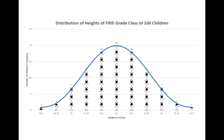You should have noticed that as the heights increased, so did the number of children who were that tall — and that was true until we reached the average height of 52 inches. As we continued with even taller and taller children, we found that there were fewer and fewer until, finally, we had one child who was the tallest, and that child was placed on the far right side of the curve.